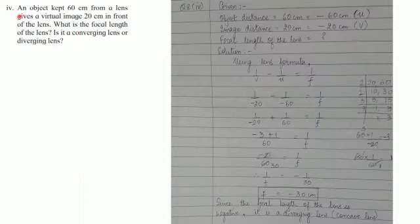Coming to the fourth numerical, an object kept 60 centimeters from a lens gives a virtual image 20 centimeters in front of the lens. What is the focal length of the lens? Is it a converging lens or diverging lens?